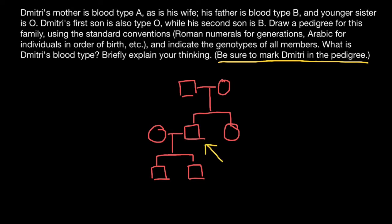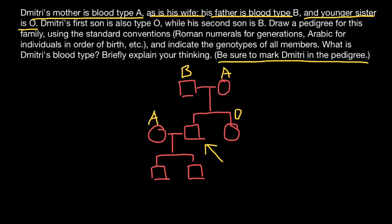We show the proband on the pedigree with an arrow. We know that Dmitri's mother is blood type A, so let's put A here. His wife is also blood type A. His father is blood type B, so let's put B here. His younger sister is blood type O. Dmitri's first son is type O, and his second son is type B.